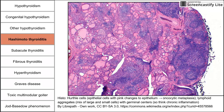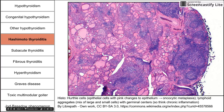Here's a histology image of Hashimoto's thyroiditis. You can see the oncocytic metaplasia and a lot more blue-purple staining than normal. Germinal centers are visible, confirming chronic inflammation. Some normal thyroid follicles remain, but they are mostly surrounded by inflammation, explaining the gland's decreased function.